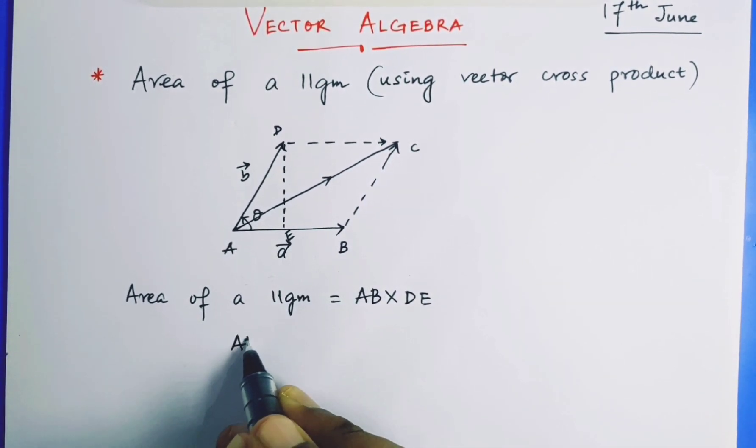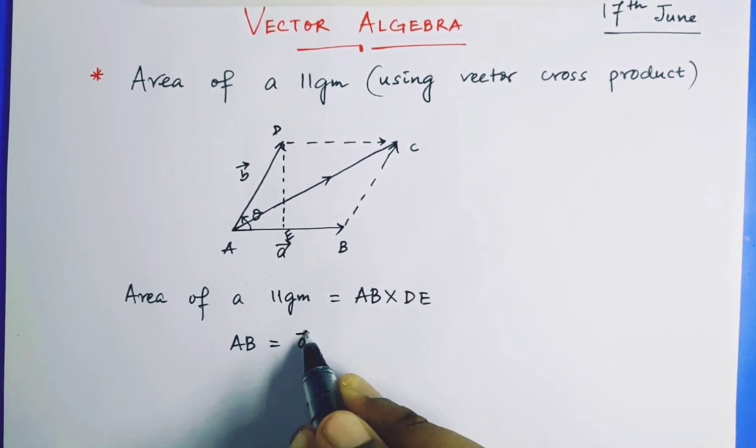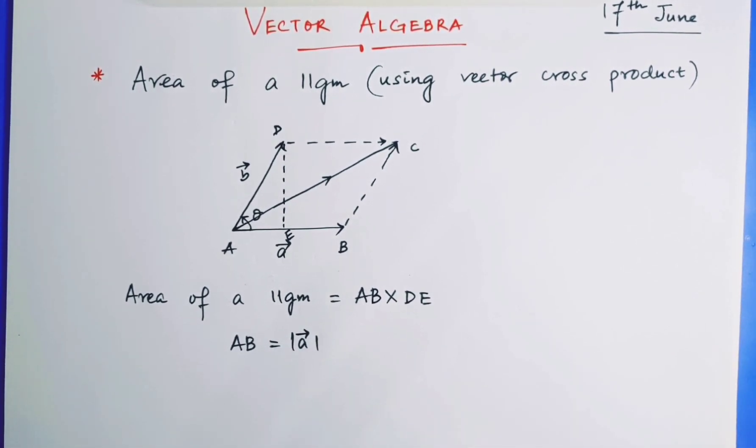Now what is AB? AB is nothing but the length of the vector A. So can I write AB is equal to |A|.